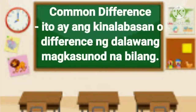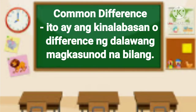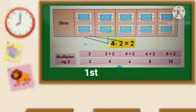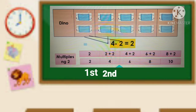Magaling! Ito ay ang kinalabasan o difference ng dalawang magkasunod na bilang. Atin munang tukuyin ang mga multiples ng bilang na 2. Sa ating halimbawa, ang unang multiple ng 2 ay 2. Paano makukuha ang common difference na 2? Ibabawas ang unang multiple na dalawa sa kabuuan at pangalawang multiple na 4. Para makuha ang pangalawang multiple, idagdag lang ang common difference na 2 sa unang multiple na 2. So 2 plus 2, ang pangalawang multiple natin ay 4. Para matukoy naman ang pangatlong multiple, idagdag ulit ang common difference na 2 sa pangalawang multiple natin na 4. So 4 dagdagan ng 2, ang sagot ay 6.